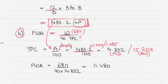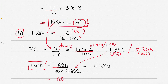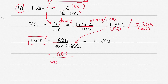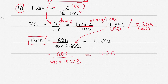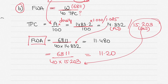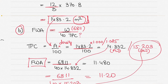If using fresh water TPC: FWA = 6811 ÷ (40 × 14.832) = 11.48 mm. If using sea water TPC: FWA = 6811 ÷ (40 × 15.203) = 11.20 mm. Since fresh water allowance refers to a vessel moving from sea water to fresh water, ideally you would take the sea water TPC. If the density is not specified, you can make an assumption, state it, and write down the appropriate answer.